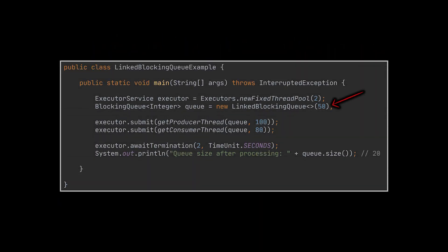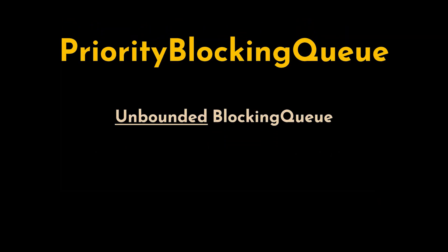In this example, we initialized a LinkedBlockingQueue with a capacity of 50, but it could also be left unbounded by omitting the capacity argument. The producer thread adds 100 elements and the consumer thread consumes 80 of them. When we stop waiting for the threads to execute, we will find that the queue still contains 20 elements.